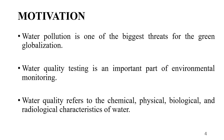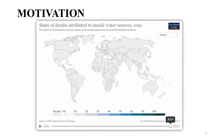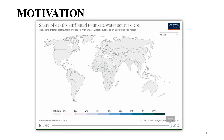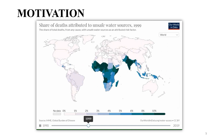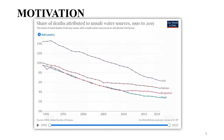The temperature measures the hotness or coldness of the water. Here you can see a map view of the share of deaths attributed to unsafe water resources, with a timeline from 1990 to 2019. Here you can also see the share of deaths attributed to unsafe water resources in the form of a graph, for four countries: India, Pakistan, Bangladesh and Nepal.